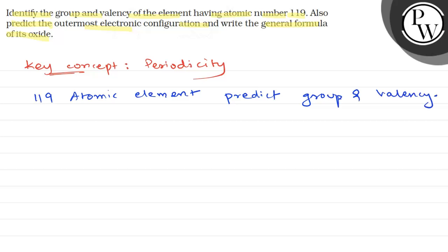So for 119, we will see 118, which is placed in the periodic table. When we talk about the 118th element in the modern periodic table, this is what happens.